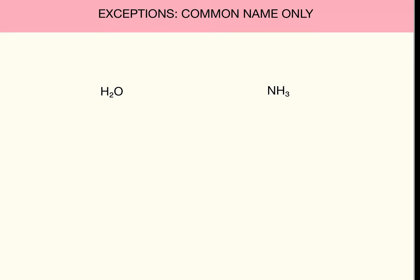Name the compound on the left. You say, easy — I see the two pieces. Name it as a type 1: hydrogen oxide. And I see that both of these are non-metals, so it must be a type 3. So this must be dihydrogen monoxide.